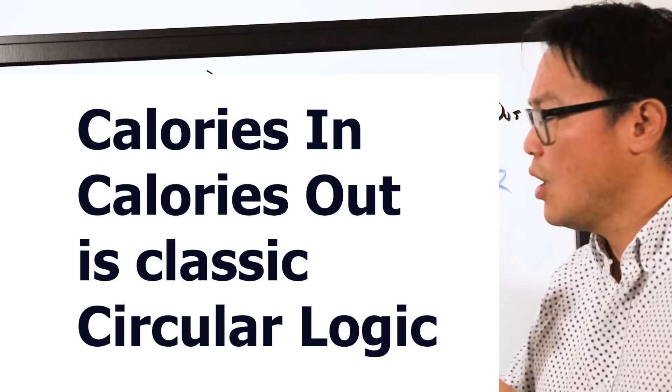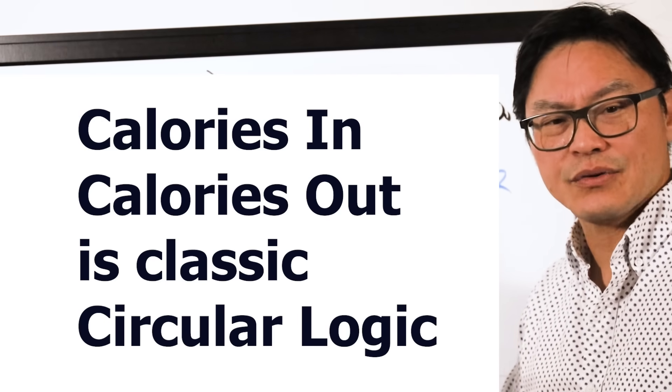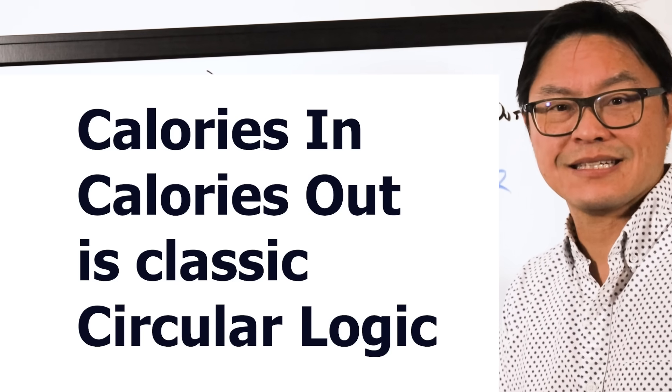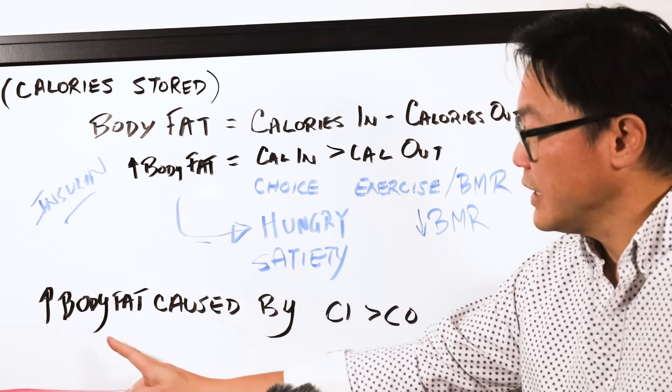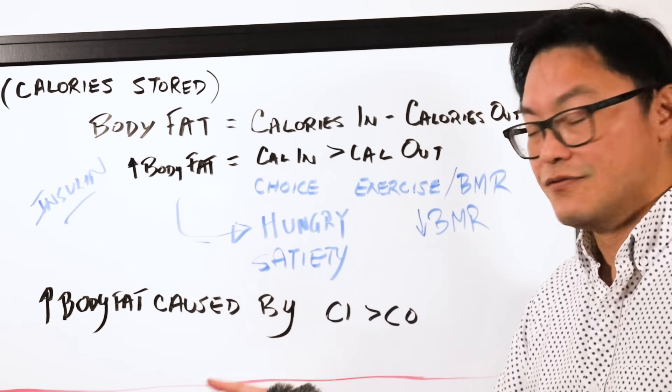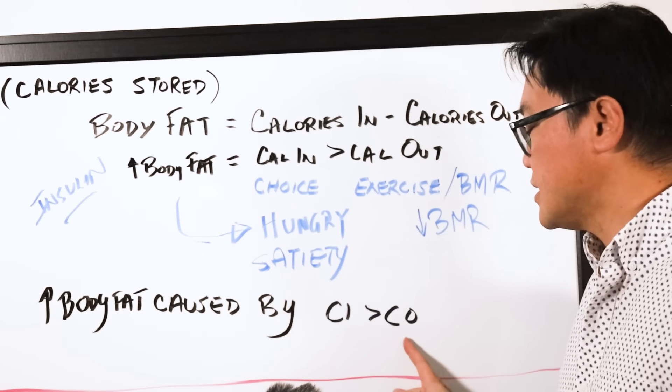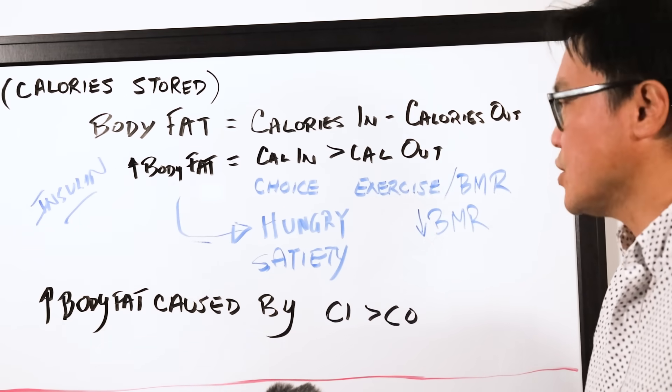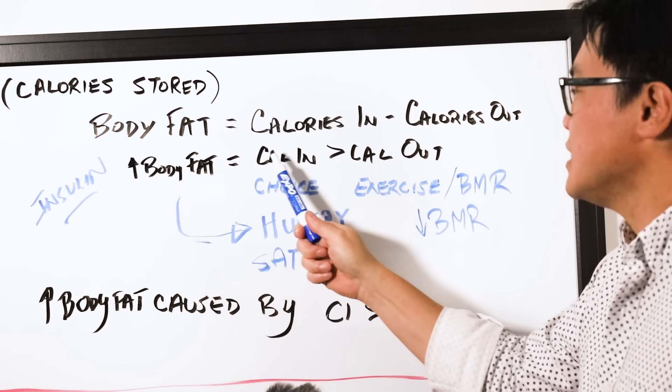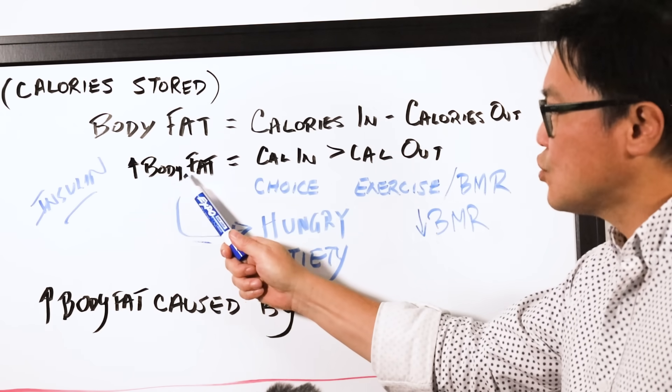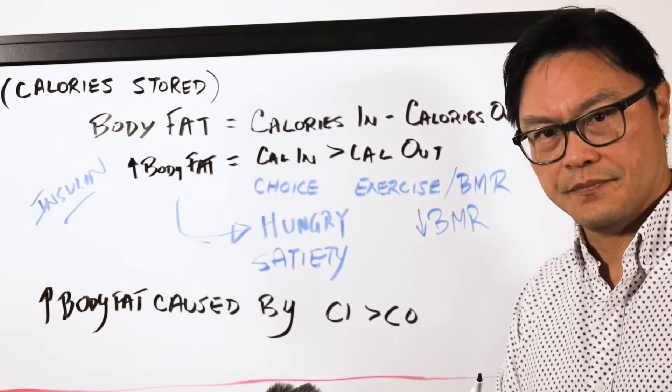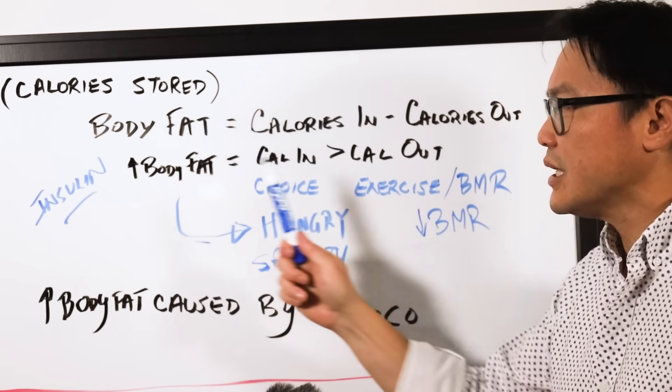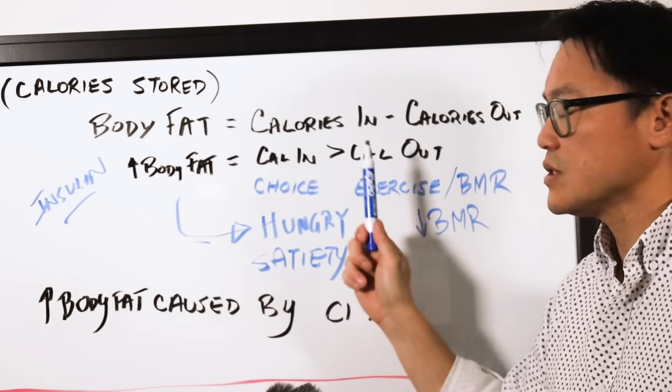So why does calories in, calories out sound so logical? Because it's classic circular logic. Let's write the equation. Increased body fat is caused by calories in greater than calories out. Okay, we agree on that. Now look at this equation. Increased body fat is equal to calories in greater than calories out. These two terms are equal, which means that you can take one of these terms and replace it with the other. Just like if I said 3 plus 4 equals 7, anywhere I saw 3 plus 4, I could put 7. And anywhere I saw 7, I could put 3 plus 4.